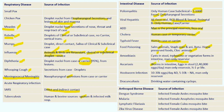Ascariasis: worms present in the intestine, eggs excreted in stool — about 240,000 eggs per day; man is the only reservoir; worms live six months to one year. Hookworm infection: in contrast to Ascariasis, Ancylostoma duodenale lays about 10,000 to 30,000 eggs per day; Necator americanus lays about 5,000 to 10,000 eggs. Man is the only reservoir. In Dracunculiasis, drinking water contaminated by Cyclops transmits the disease.